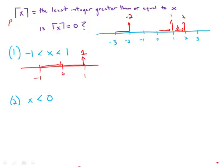But if x is between negative one and zero, it rounds up to zero. For example, ceiling of 0.5 is one, but ceiling of negative 0.5 is zero. We can pick some values where ceiling of x equals zero and some where it doesn't. So statement one alone is insufficient.